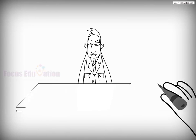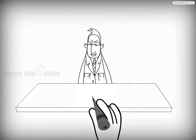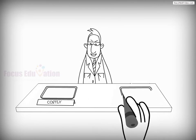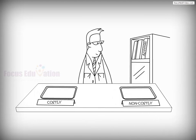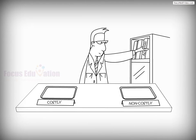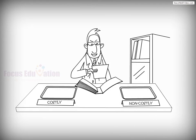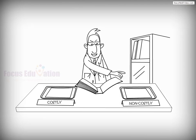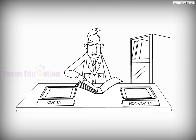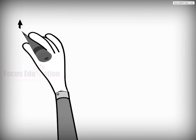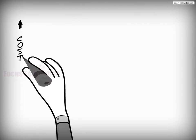Activity-Based Costing is a special costing method that identifies those activities which are costly to perform. It focuses on activities rather than departments as the fundamental cost objects. In ABC, costs are assigned according to the cause and effect relationship between activities and cost objects.